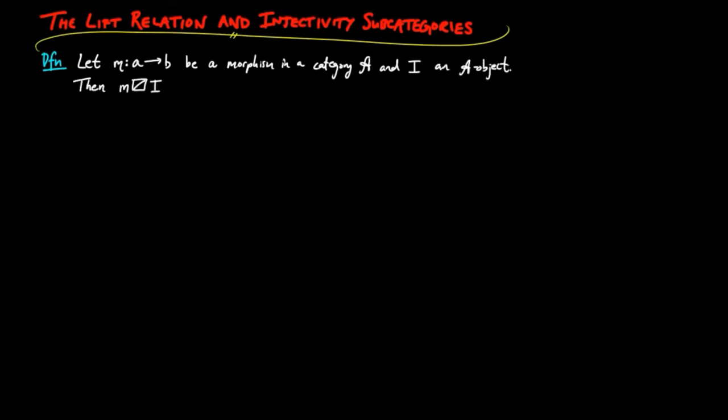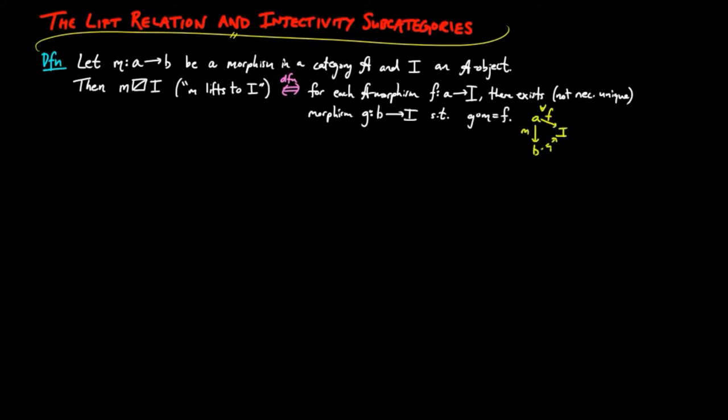Then M lifts to I, provided for each morphism F from A to I, there exists a not necessarily unique morphism G from B to I, such that Gm is equal to F.